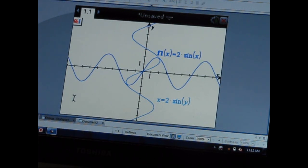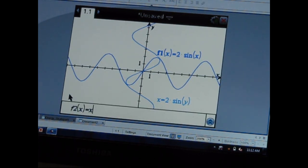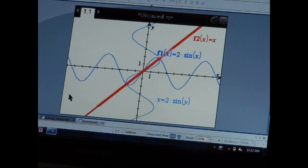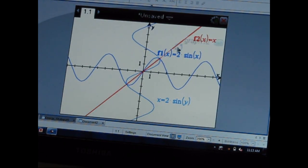So if you want to look at the line of y equals x, we can see there that the reflection of 2 times sine of x is reflected over y equals x and we get the x equals 2 times sine of y.